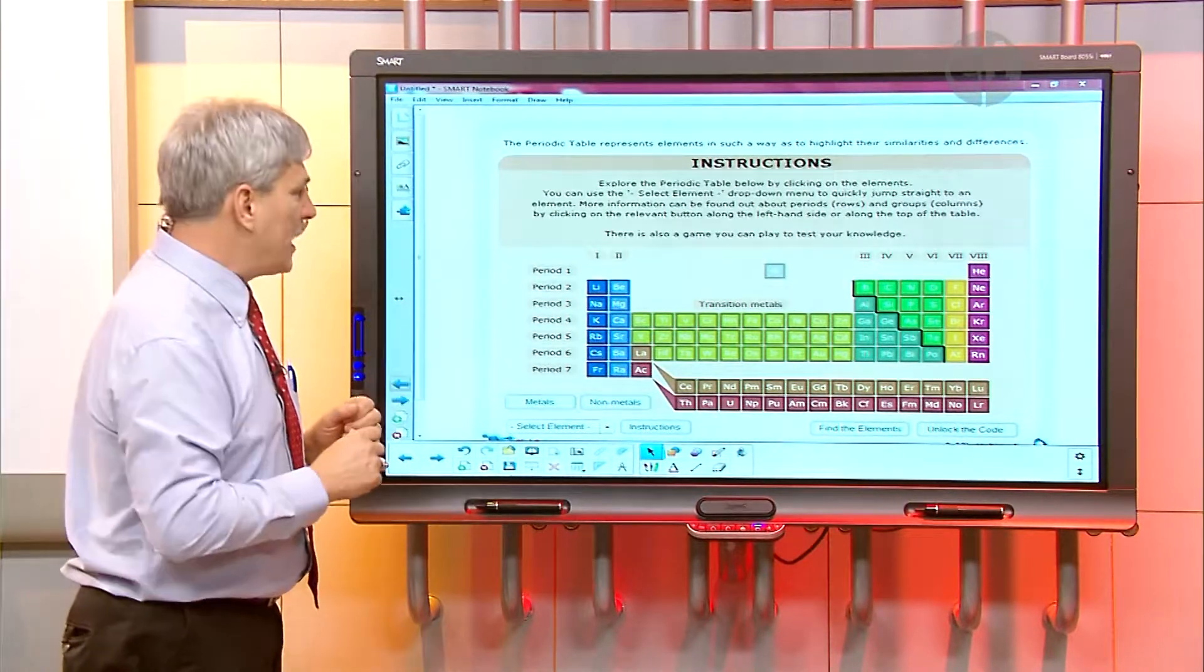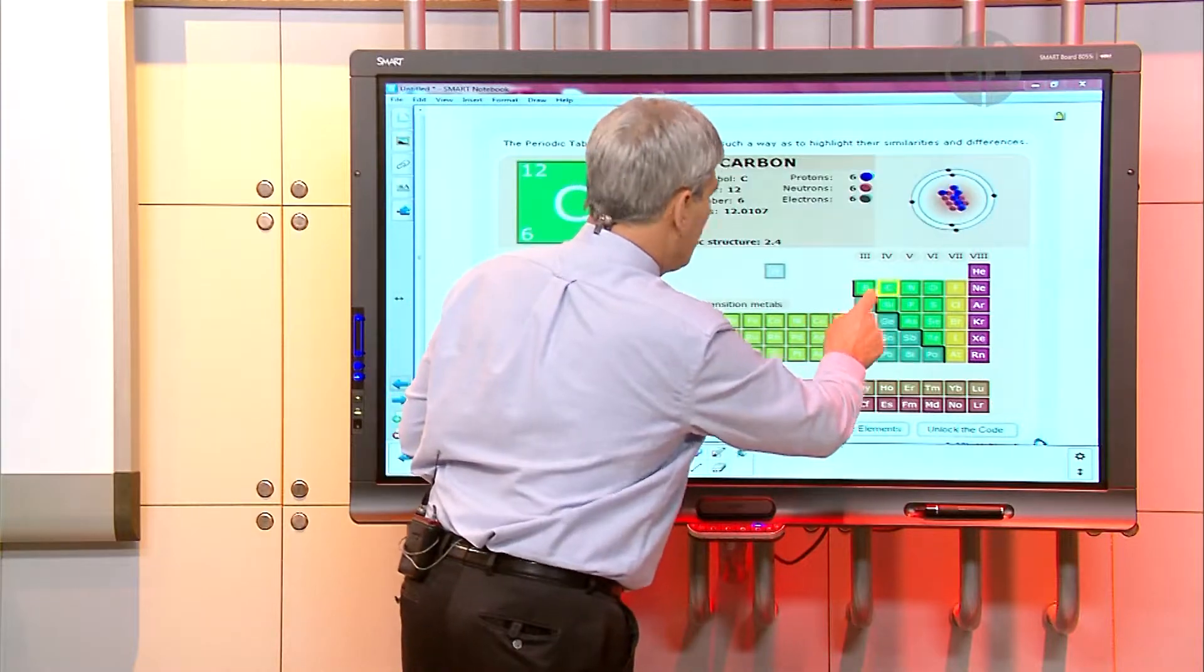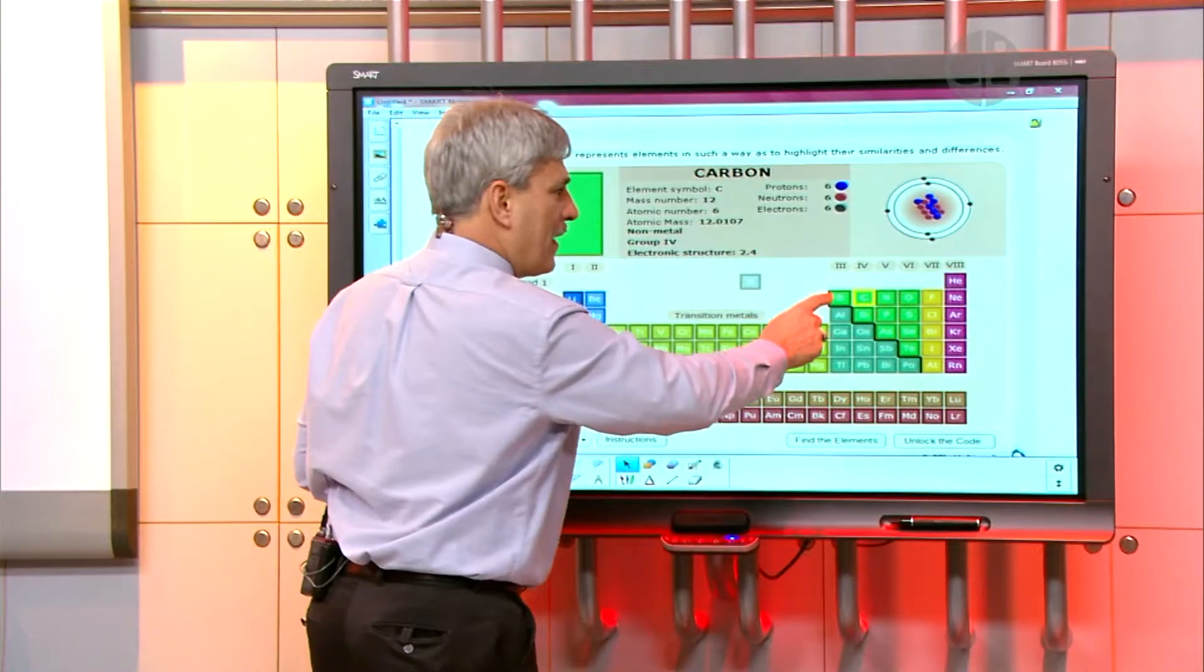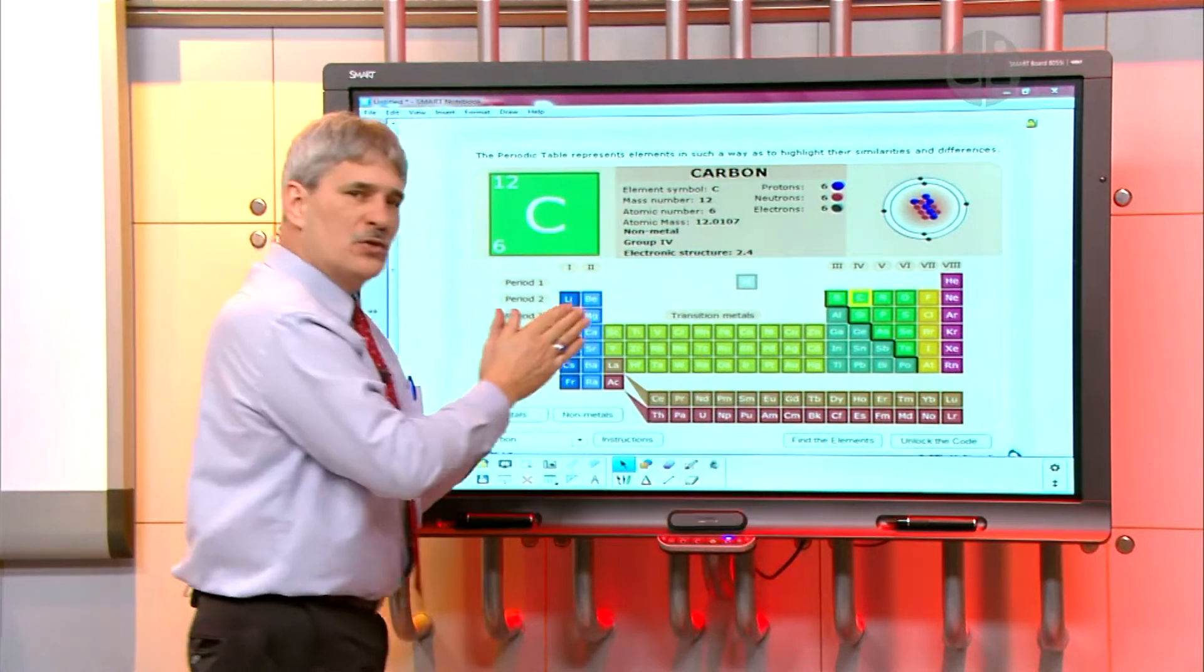So let's take carbon for example here. When I push it, notes come up and there's two numbers here: there's a twelve and a six. Now this six is the atomic number. If you notice back to our periodic table, we have hydrogen here which would be one, helium be two, three is lithium, four beryllium, five would be boron, and then six is carbon.